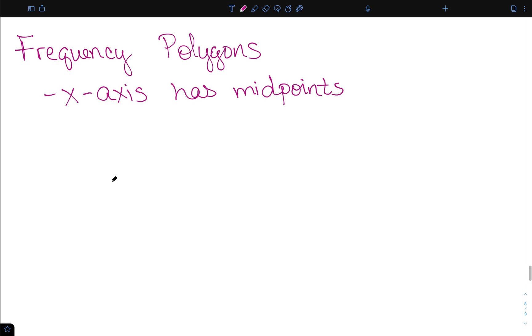The x-axis for a frequency polygon will have the midpoints of the classes. The y-axis is going to contain frequencies, and just like a histogram we can also do it with relative frequencies.